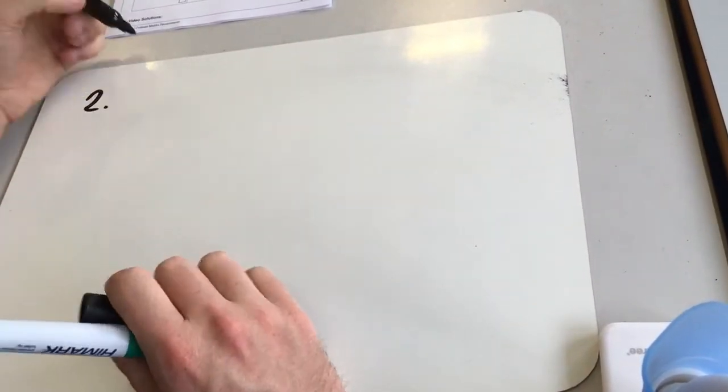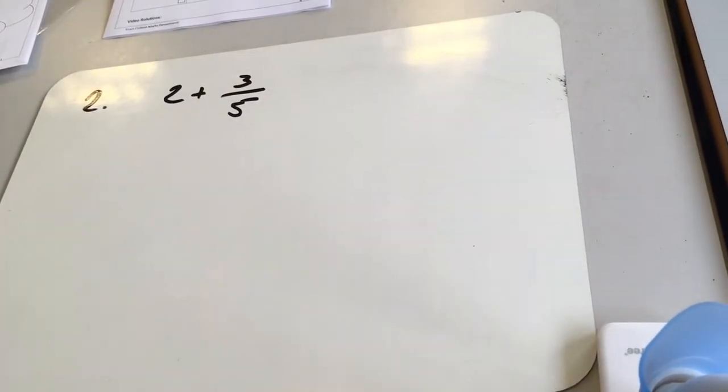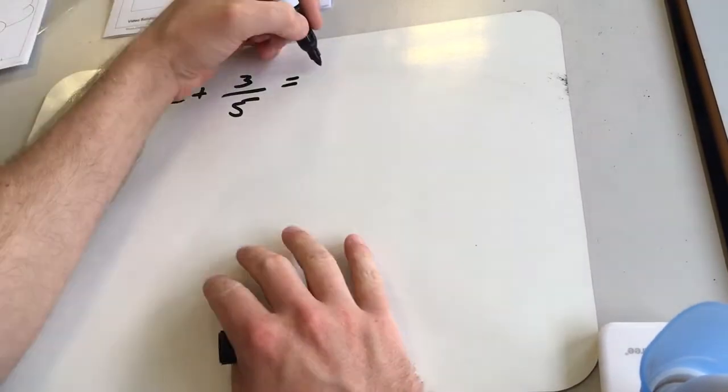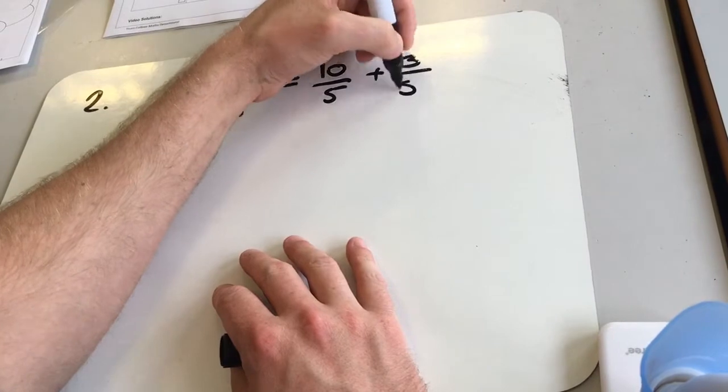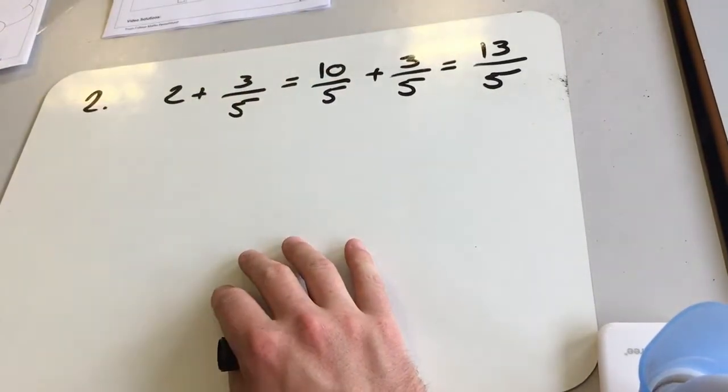Question 2. 2 plus 3 over 5, so we need to find a common denominator. So we're going to turn 2 into a number of fifths, and I know 1 is going to be 5 fifths, so 2 would be 10 over 5 plus 3 over 5, which gives us 13 over 5.